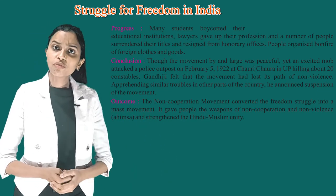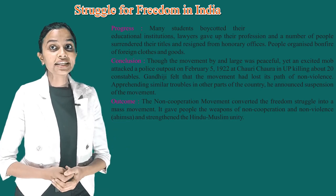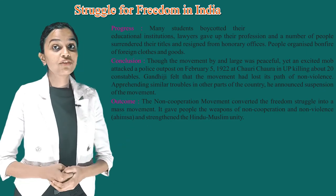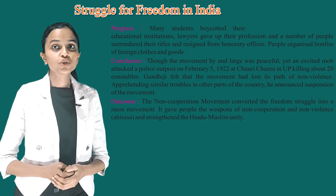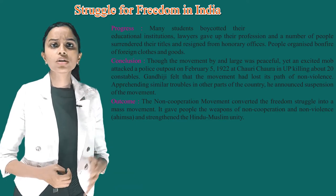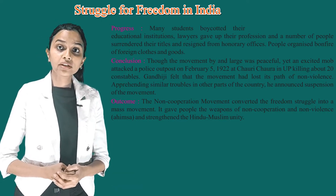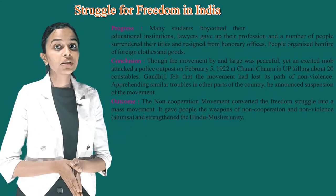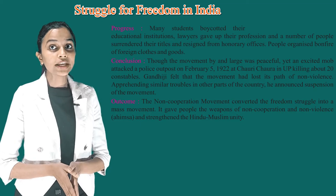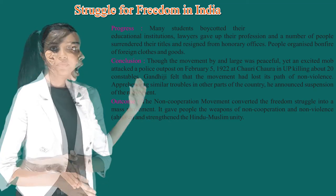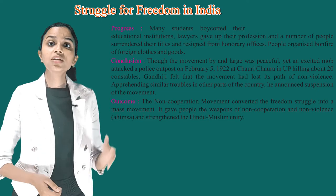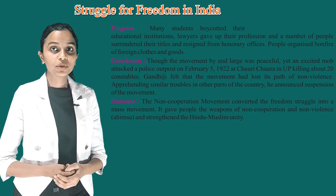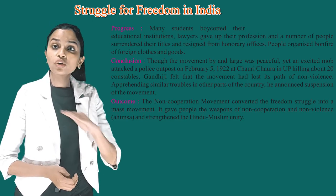Though the movement was largely peaceful, an excited mob attacked a police outpost on February 5, 1922 at Chauri Chaura in UP, killing about 20 constables. Gandhiji felt that the movement had lost its path of non-violence and called it off. Nevertheless, the Non-Cooperation Movement converted the freedom struggle into a mass movement, gave people the weapons of non-cooperation and non-violence (Ahimsa), and strengthened Hindu-Muslim unity.